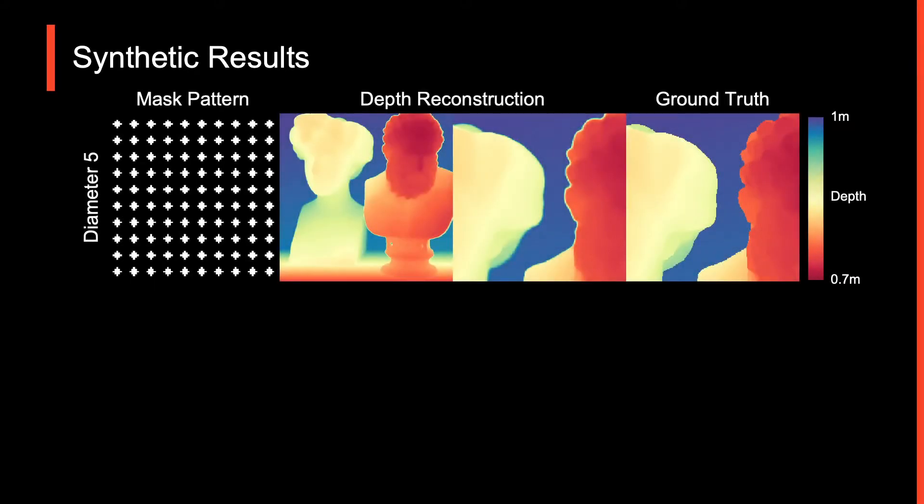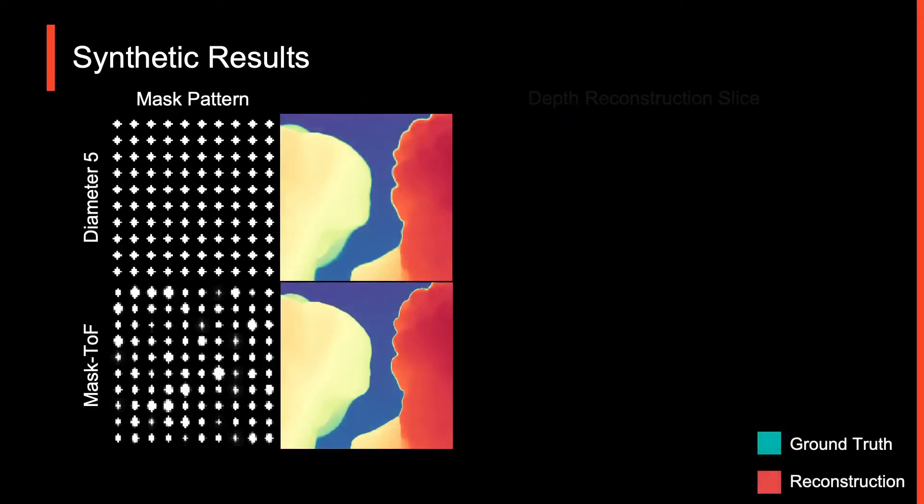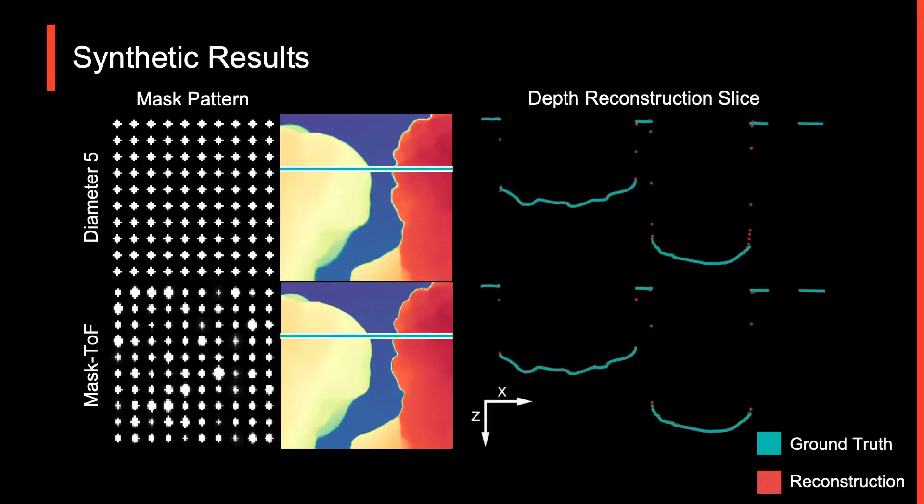While an intermediate-sized aperture provides a promising balance between noise and flying pixels, Mask-ToF provides significantly improved depth reconstruction for the same light throughput. This improvement is again made more clear in the depth-sized visualization, where the reduction in flying pixels is easily visible. We encourage the viewer to see the paper for additional quantitative results.